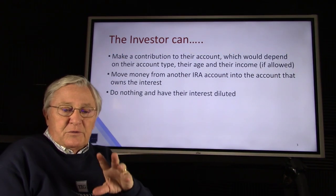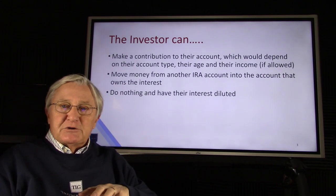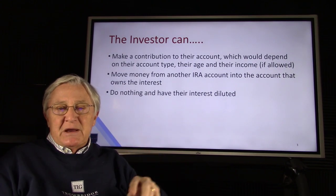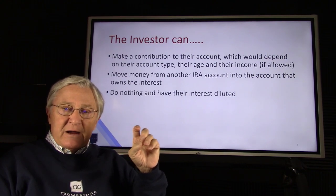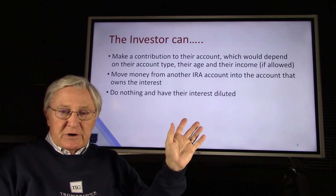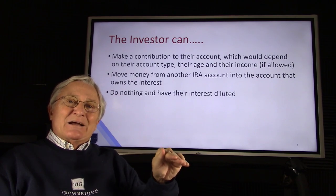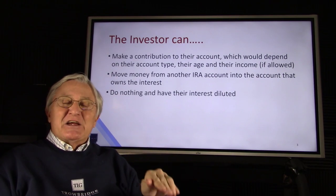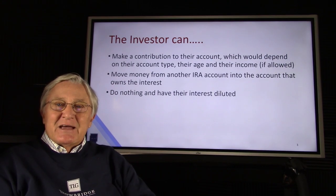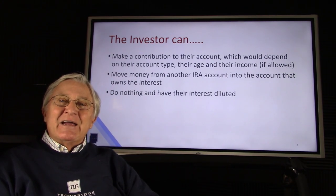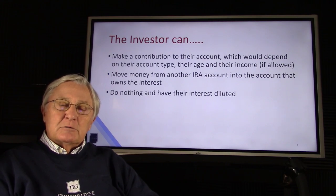Here's what we can do. The investor can make a contribution. Maybe the investor hasn't made their contribution this year to the IRA for one reason or another. According to the rules, they can make a contribution which will get $10,000 into their IRA, and then they can use that for the capital call.